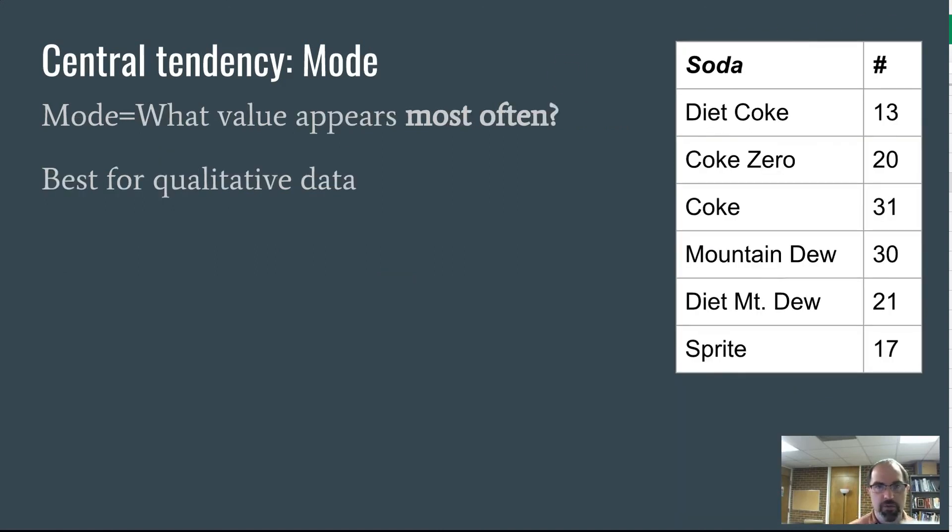And then mode, some of you might know is the value that is the most common. For numerical data, the mode's not really all that useful because you can have a zero that shows up a lot and that's not that exciting. But it is really helpful for qualitative data, for what's called categorical data.